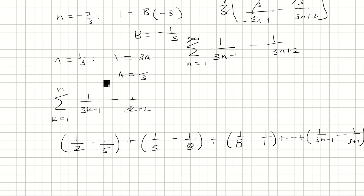So then a lot of things are going to cancel. Second with the first, this one with that. Basically, all this is going to cancel, and we're left with 1 half minus 1 over 3n plus 2. And that's going to be our S of n.